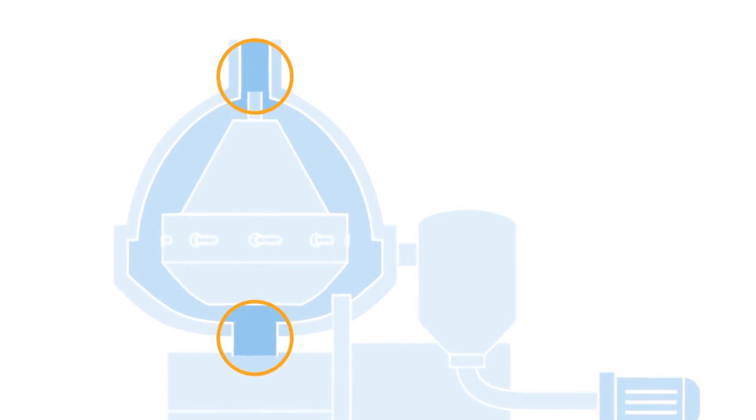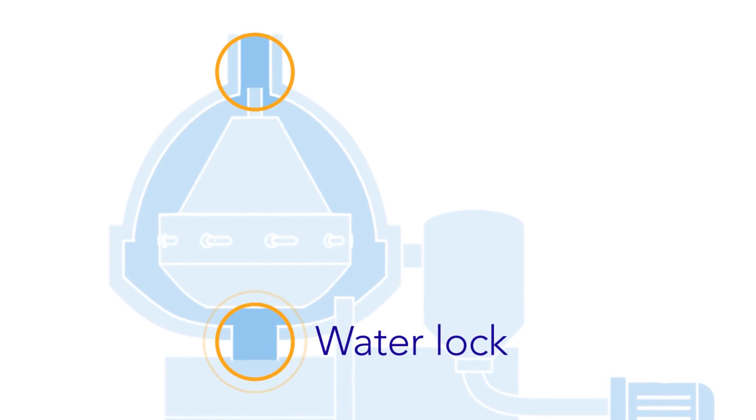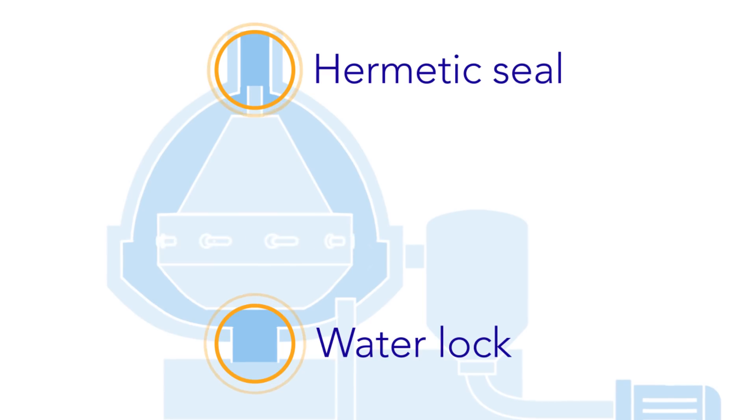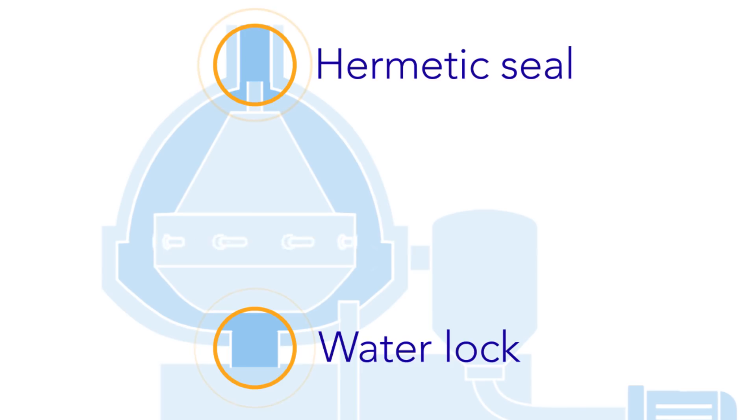The seal below the bowl works as a water lock, which air can't get through. The seal at the outlet tightens the frame to keep low pressure. This hermetic seal is also key to keep the separator air tight.